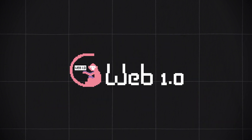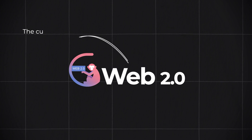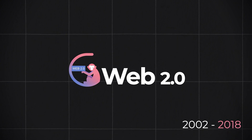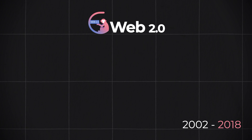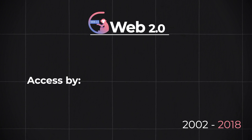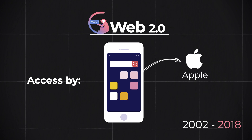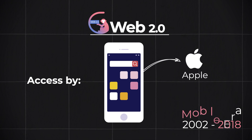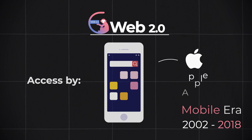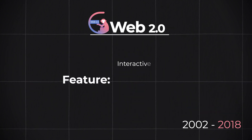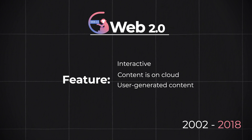So what about Web 2.0, which is the version of the web that all of us are using right now? In Web 2.0, a new medium to access the internet was created — smartphones. In this space, Apple has been dominating. People also refer to this period as the mobile era. When you access the internet now, it is highly interactive, content can be stored on the cloud, and users can generate their own content. This is the read and write version of the internet.